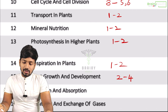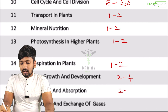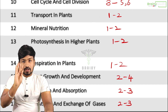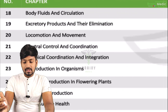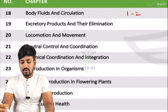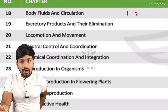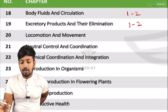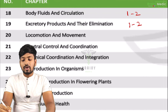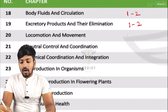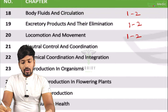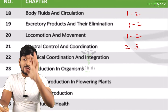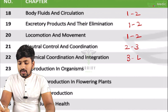Digestion and absorption: two to three questions. Breathing: two to three questions. Body fluids and circulation: one to two questions. Excretory products and elimination: some questions. Locomotion and movement: two questions. Neural control and coordination: two to three questions. Chemical control and coordination: three to four questions.